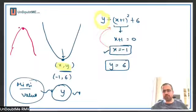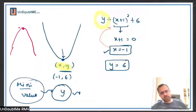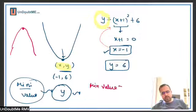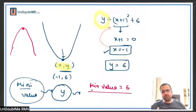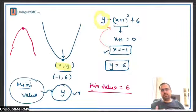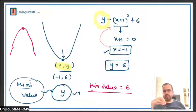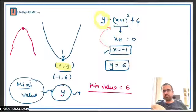So the question itself will ask for maximum if it is a downward parabola. For this case, the minimum value is 6. More or less it is the same vertex, but now we are using it. The vertex is the coordinate of the extremum — minimum or maximum, depending on which parabola we are dealing with.